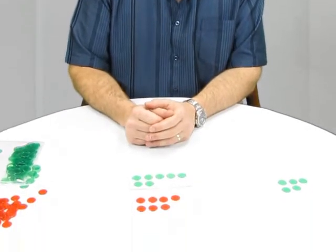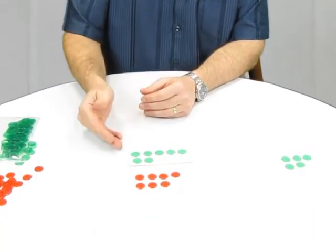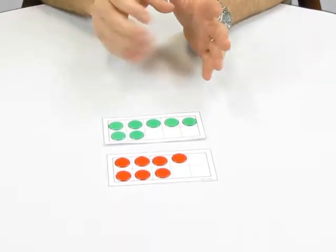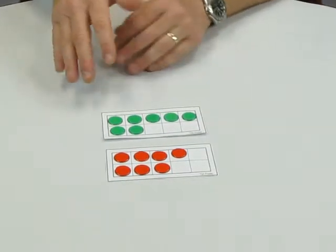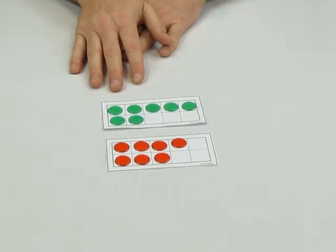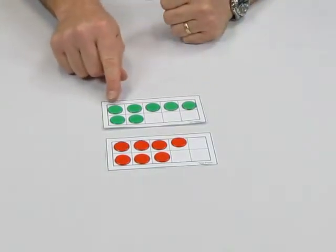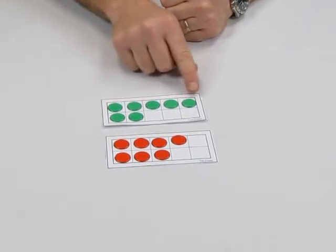If you look down now, I've got two different configurations of a 10 frame—one with green counters and one with red counters. Let me share the difference between those two. The one at the top made up of green counters shows seven, but you'll notice the five top cells are filled first.